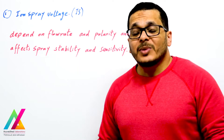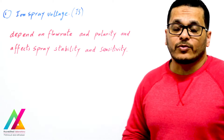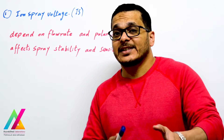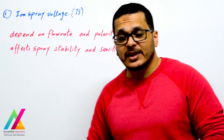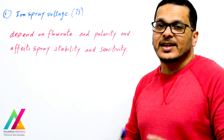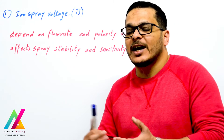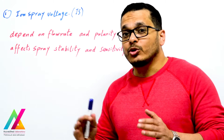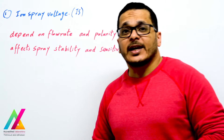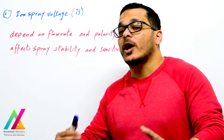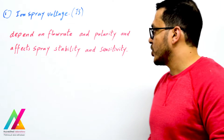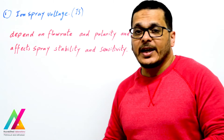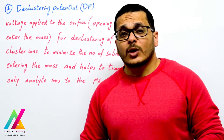This voltage depends on flow rate and polarity of compounds. If you increase the flow rate for your solvent carrying sample molecules coming from HPLC to the ion source, you need to increase the ion spray voltage to the optimum range to help the nebulizer gas and temperature ionize your sample molecules. It also affects spray stability and sensitivity.